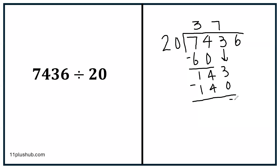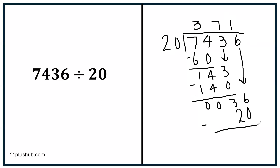3 subtract 0 is 3, 4 subtract 4 is 0, 1 subtract 1 is 0. The next number comes down, so at the bottom here we're going to have 36. And then 20 into 36 goes once. 20 times 1 is 20. So we subtract 20 from 36: 6 subtract 0 is 6, 3 subtract 2 is 1. And we have a remainder of 16 — there are no other numbers to come down, so that is our remainder.